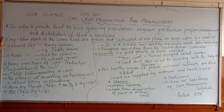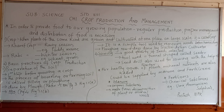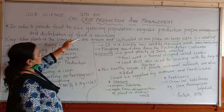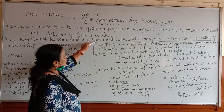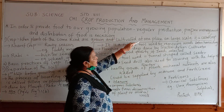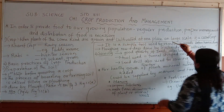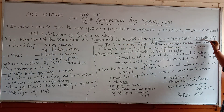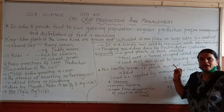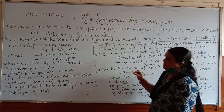Now the first point I would like to explain is crop. What do you mean by crop? It means when plants of the same kind are grown and cultivated at one place on a large scale, it is called a crop. Crops we have two types.